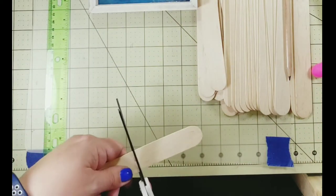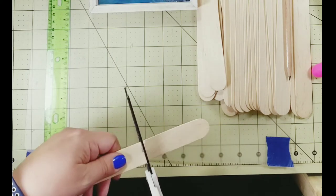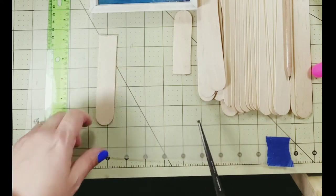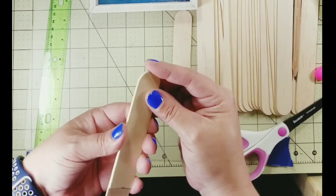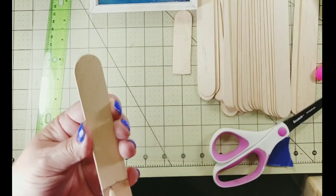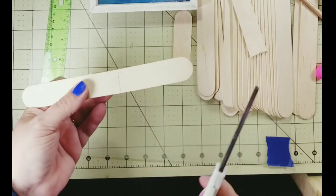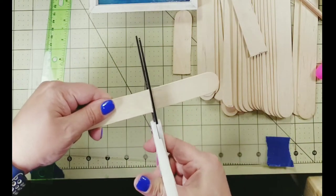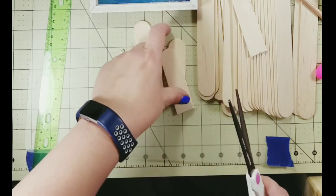I measured about four and a half inches from the top, made a line with my pencil, and then I used some old scissors to just cut along that line. You want to make sure you use old scissors because this will dull your blade up pretty quick. Just cut slowly along that line so that you don't split the craft sticks.